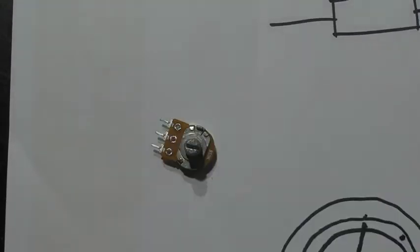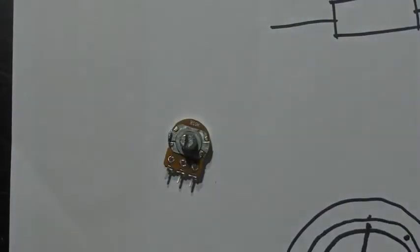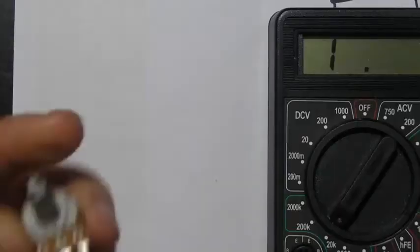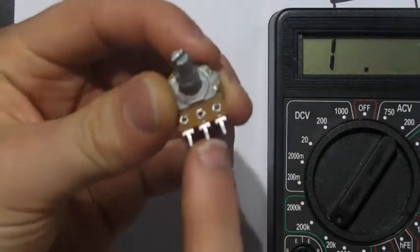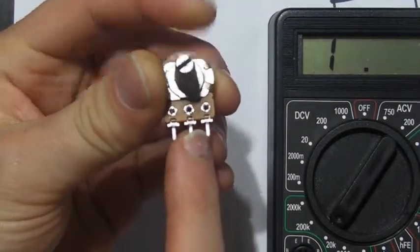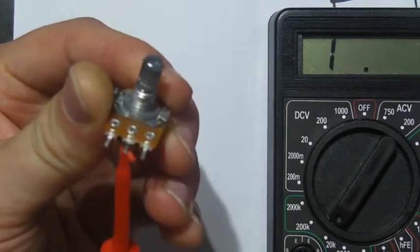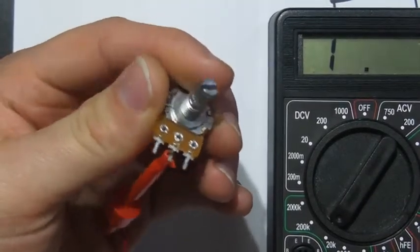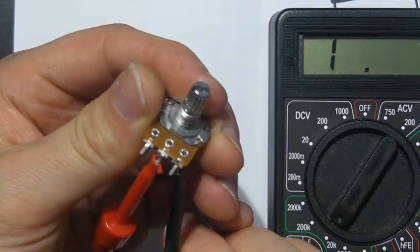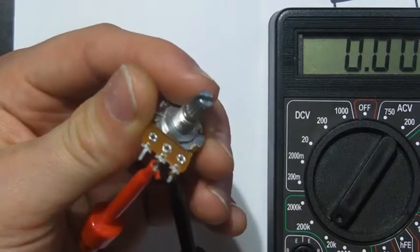And I'll actually go ahead and demonstrate that by connecting a multimeter up and showing you the results of it. And what I'm going to do, the middle pin on this particular one and most other potentiometers, the middle pin is generally the wiper. So I'm going to connect one side of my multimeter to the wiper and just choose another side of the potentiometer.